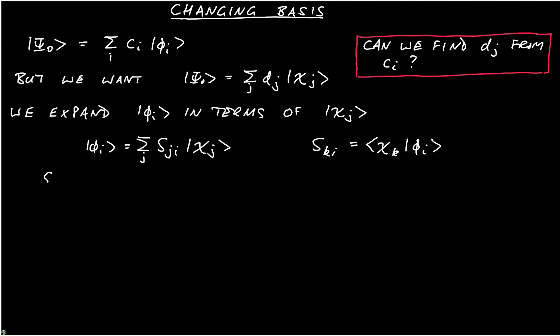So now we write ket psi 0 is equal to the sum over i of c_i, chi phi_i, but now we substitute in for phi_i. So that's equal to the sum over i, c_i, multiplied by the sum over j of s_ji chi_j. We can now combine the sums and say that's the sum over i and j of c_i s_ji chi_j.